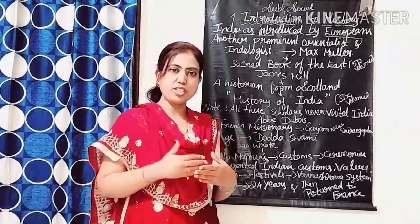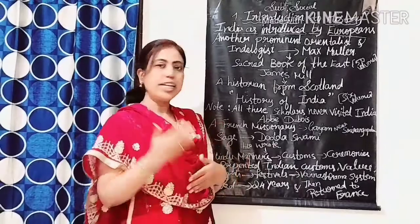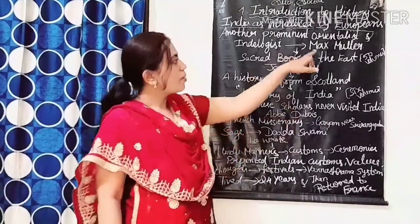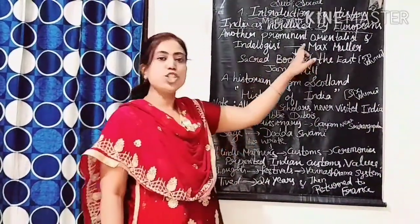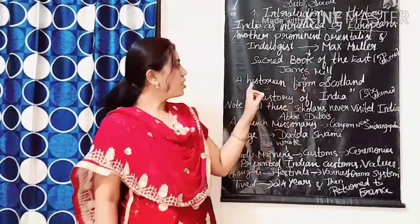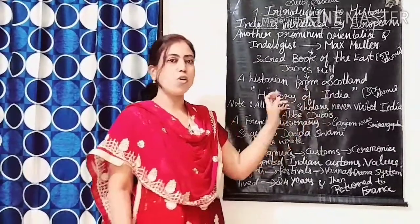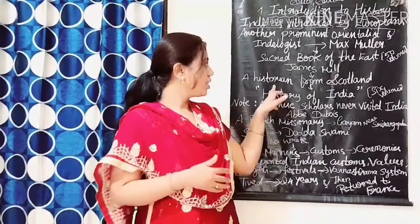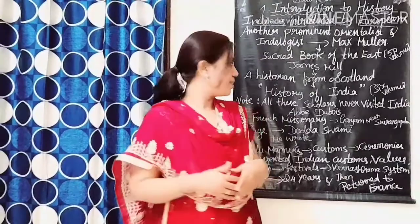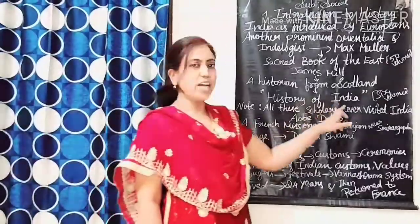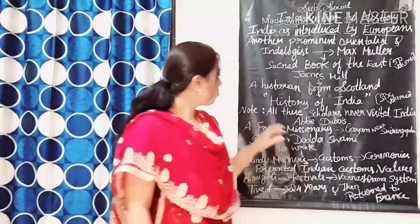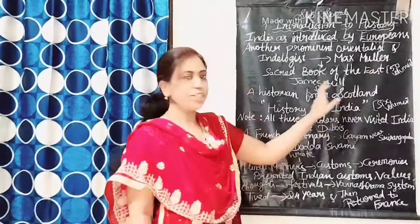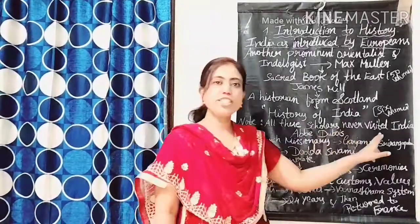Spirituality means the beliefs and trust we have in religion. The Indologist — meaning one who studies the history and culture of India — Max Müller was a German scholar. Next, James Mill, a historian from Scotland. A historian means the one who constructs history on the basis of proof and evidence. He wrote the history of India in six volumes. It is important to note that Max Müller and James Mill never visited India.